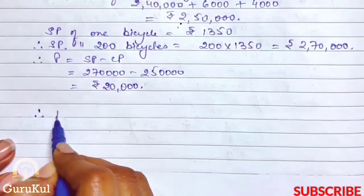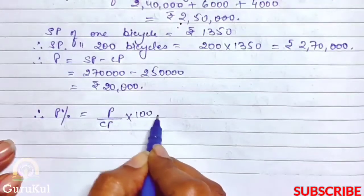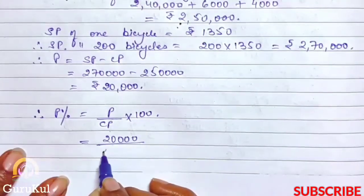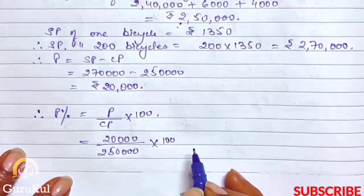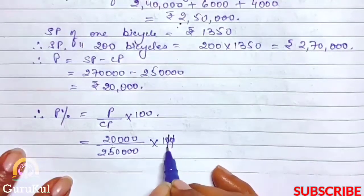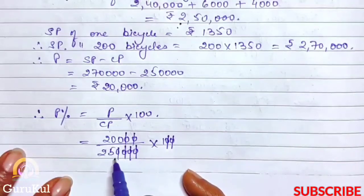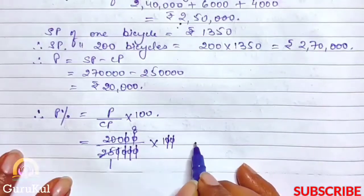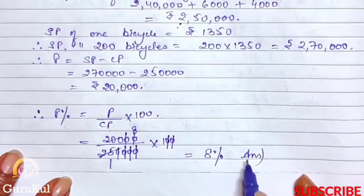Now we need to find the profit percentage. Profit percent is equal to profit divided by CP into 100. So: 20,000 by 2,50,000 into 100. Simplifying: 200 by 25, which reduces to 8 percent. This is the profit percentage.